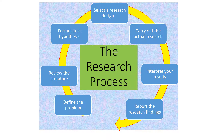The research process has seven steps. The first step is to find the problem. Here you choose something that's very general, something that's very broad, such as drug abuse. Then you want to review all the literature as it pertains to drug abuse.